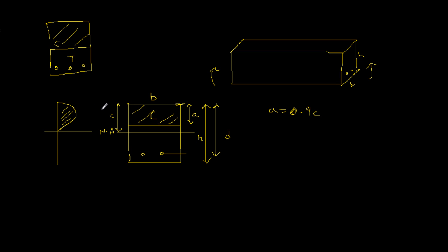It will all make more sense once we start doing questions. Just know that a is the length between the top fiber and the bottom of the compression box — it ends just above the neutral axis. We simplify the compression zone to a rectangle rather than a parabola because the area of a rectangle is much easier to calculate, so we avoid a complex formula.